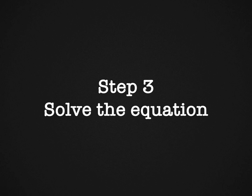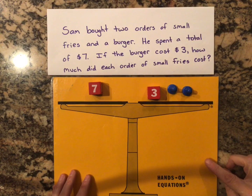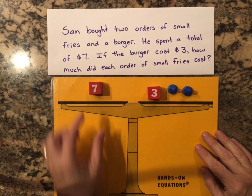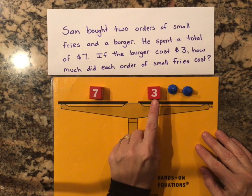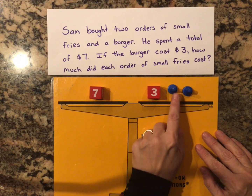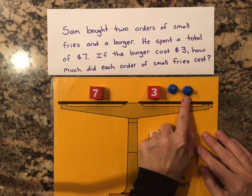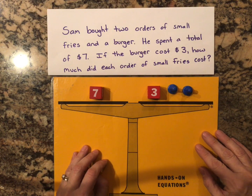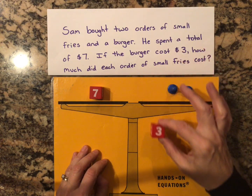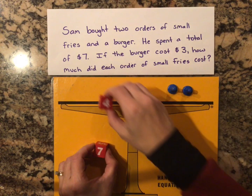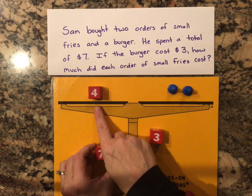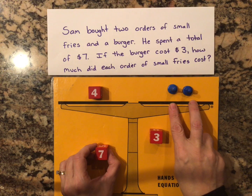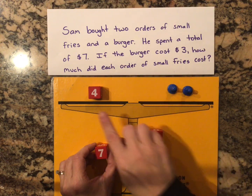Step three is to solve the equation. I'm going to set up my equation on my hands-on equation mat. My equation is 7 = 3 + 2X. Now I'm going to use my legal moves to solve it. If I remove 3 from each side, that leaves me with 4 = 2X. That means that each X is equal to 2.